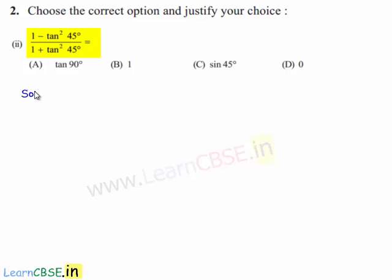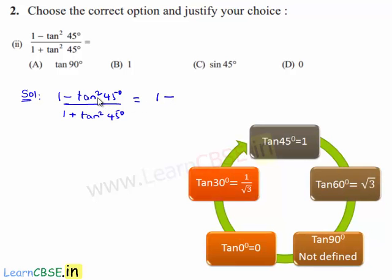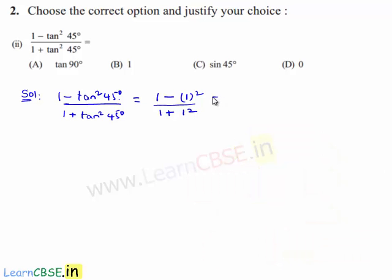Let us find the solution. Here, he has given 1 minus tan square 45 degrees by 1 plus tan square 45 degrees. This equals 1 minus tan 45 squared, where tan 45 equals 1, so 1 squared by 1 plus 1 squared, which gives 1 minus 1 by 1 plus 1, equal to 0 by 2, which is 0.